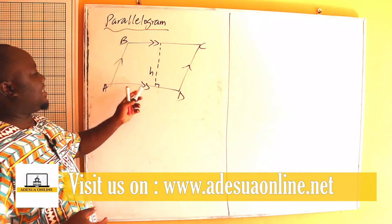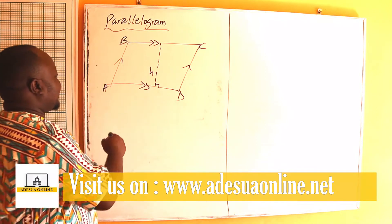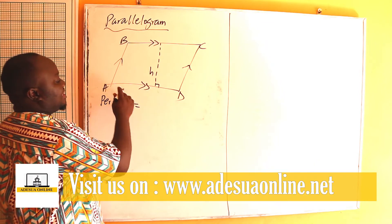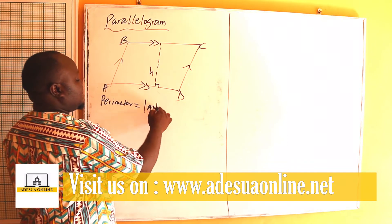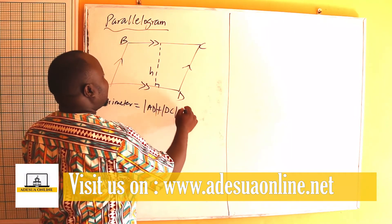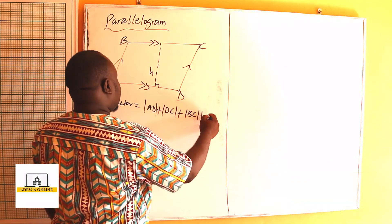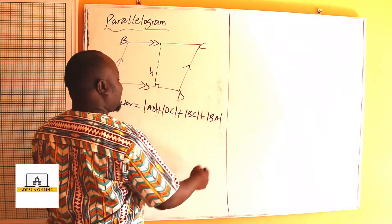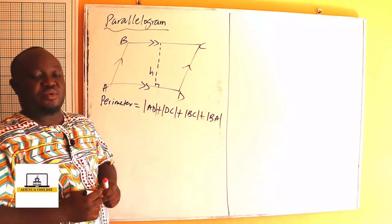So you can see that the opposite sides are parallel. And the perimeter is equal to the sum of the given lengths, which is the sum of AD plus the length of DC plus the length of BC plus the length of BA. So this will give us the perimeter, the distance around the parallelogram.